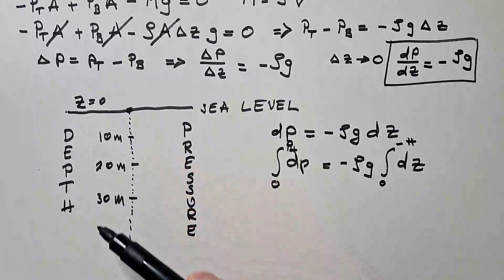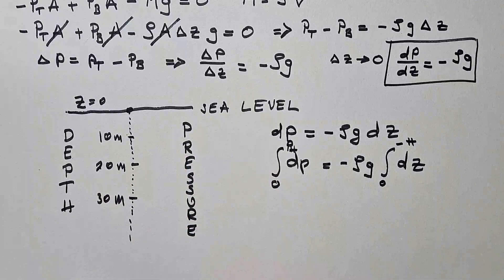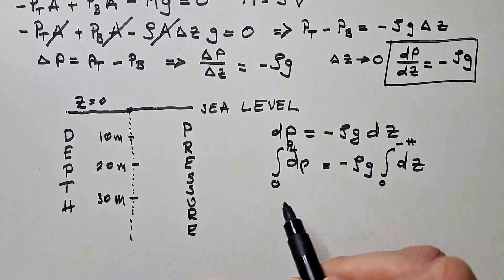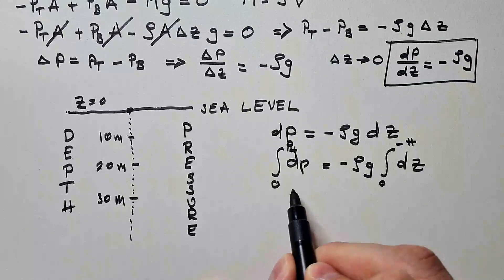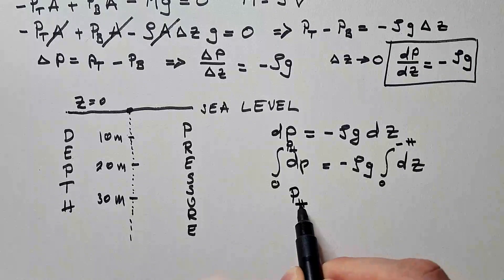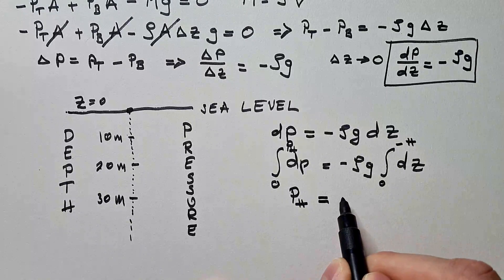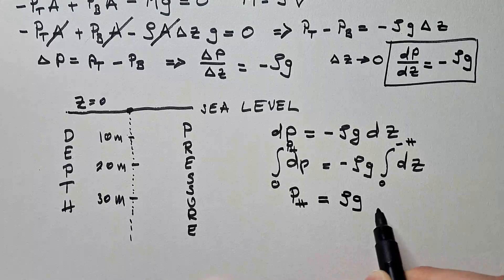Why minus? Because I am going in the opposite direction of the positive z-axis. Now, when I solve this integral, which is high school mathematics, I get that pressure at depth h below the surface is rho g h.